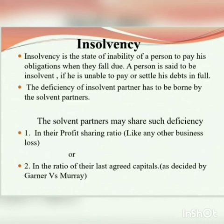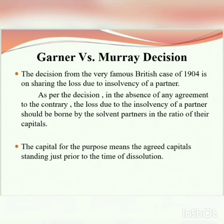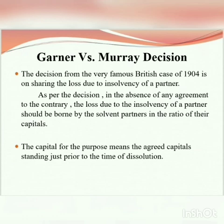The Garner versus Murray decision is from the very famous British case of 1904, on sharing the loss due to the insolvency of a partner. As per the decision, in the absence of any agreement to the contrary, the loss due to the insolvency of a partner should be borne by the solvent partners in the ratio of their capitals. The capital for this purpose means the agreed capitals standing just prior to the time of dissolution.